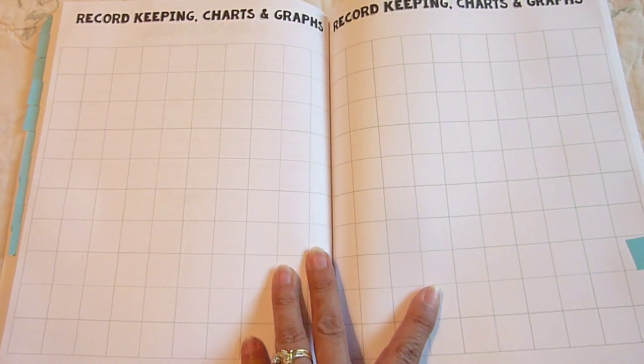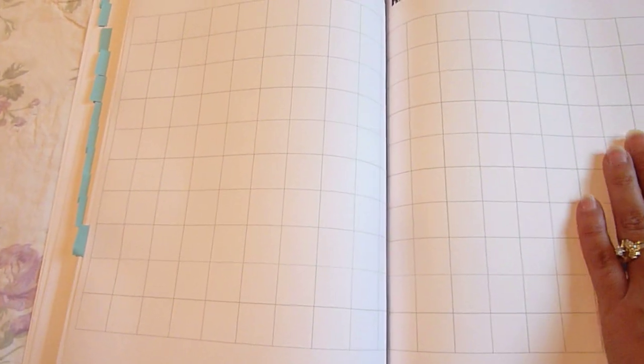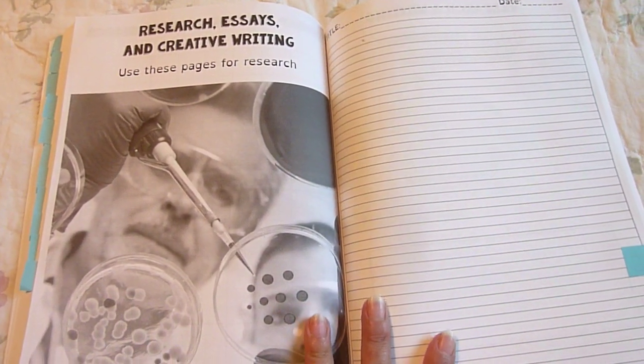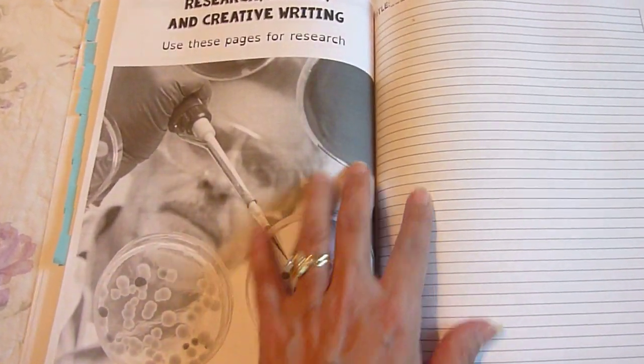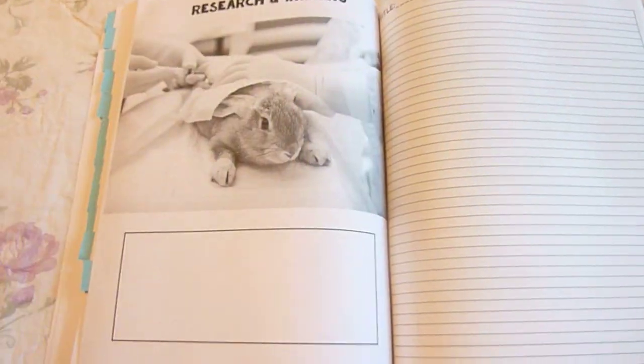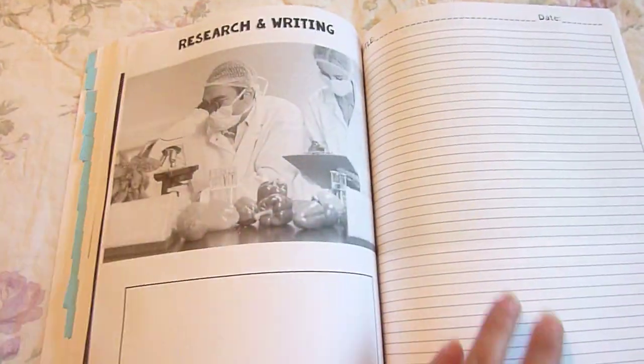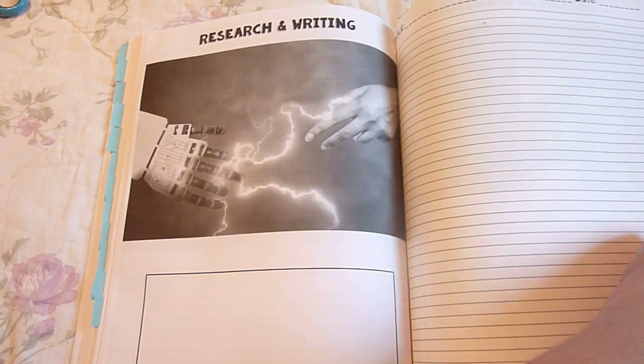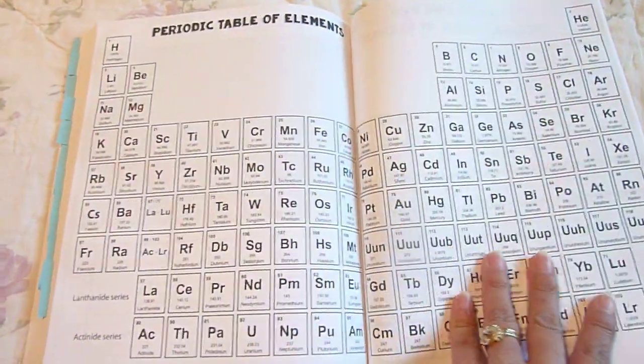Record keeping, charts, and graphs. And these are repeated as well. And these are some fun pages. Research, Essays, and Creative Writing. Use these pages for research. So they would put a title, the date. We have a lot of cute pictures. So we have quite a few of those. And again, those are those photos that were at the beginning that I showed you.